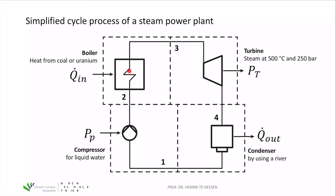We get hot steam at around 500 degrees Celsius, reaching point three — the turbine. At very high temperature and high pressure, this hot steam drives the turbine and generates electricity. We lose energy, and then we need to get rid of the remaining heat in the hot steam by running through a condenser using a river for heat exchange. Finally, we close our thermodynamic cycle by getting liquid water back, and can rerun the process.